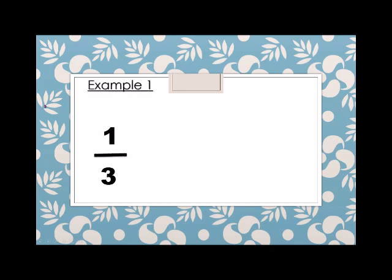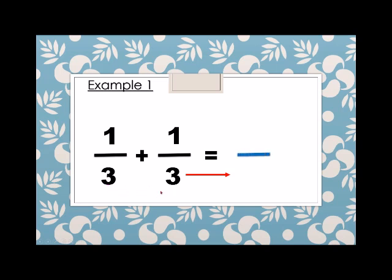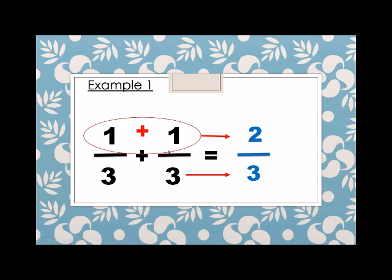We have 1 over 3 plus 1 over 3. How do we solve? We have the denominators, which are the same — 3 and 3. Therefore, the denominator of the answer is 3. And then for the numerator, we add. So 1 plus 1 is equals to 2. Therefore, the answer is 2 over 3.